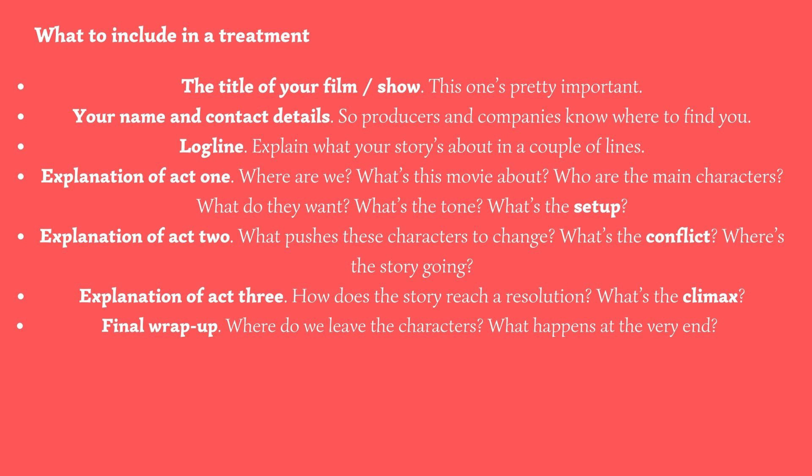You also want to have an explanation of Act 1 through 3. Act 1 is where the film is set, what the movie is about, who the main characters are, what they do, what's the tone, and what's the setup of the film. Act 2 is what pushes these characters to change, what's the conflict, and where the story is going. Act 3 would be pretty much wrapping up the story and providing a resolution to whatever problem was presented earlier in the film.